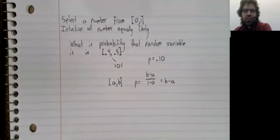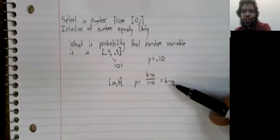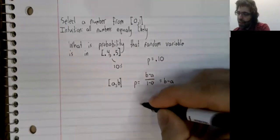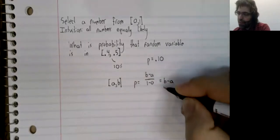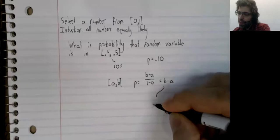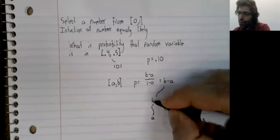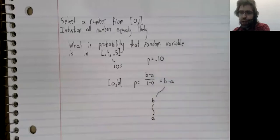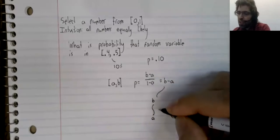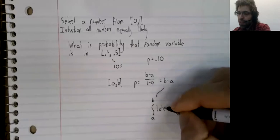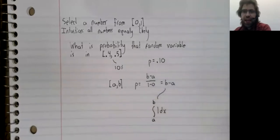And let's now relate this back to integration. B minus A, as it happens, can be thought of as the integral from A to B of 1dx.